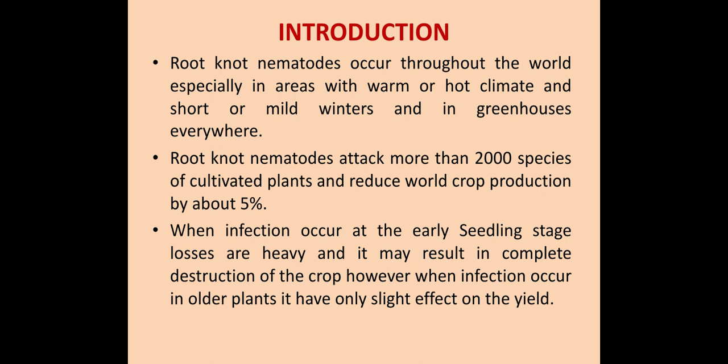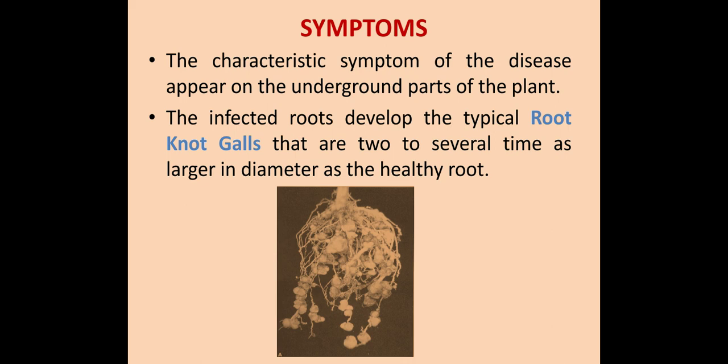Main symptoms of the disease: The characteristic symptoms appear on the underground parts of the plant, i.e. root tubers. The infected roots develop typical root knot gauze, and these gauze are two to several times as large in diameter as healthy roots. The image shows development of gauze on tomato root.